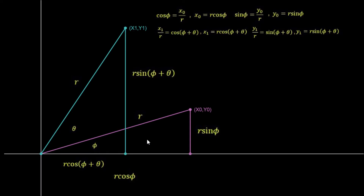Let's not get lost in the mathematics. We have three inputs: the point (x₀, y₀) and the angle θ, which is the angle we want to rotate (x₀, y₀) around. The outputs are the new position (x₁, y₁). We want an equation relating the outputs x₁, y₁ to the inputs x₀, y₀ and angle θ — we don't need angle φ in the final equation.